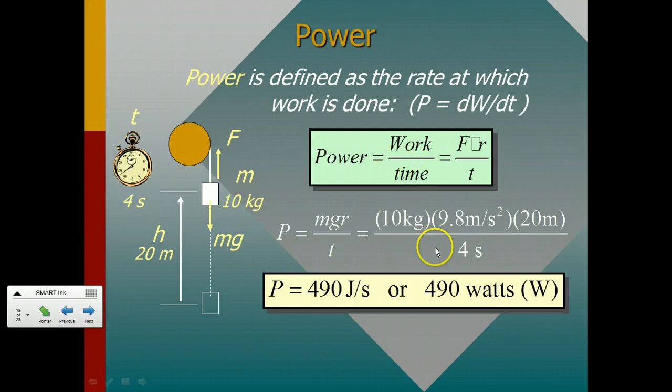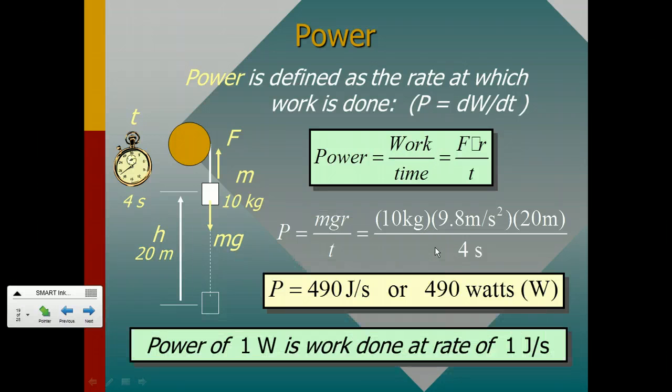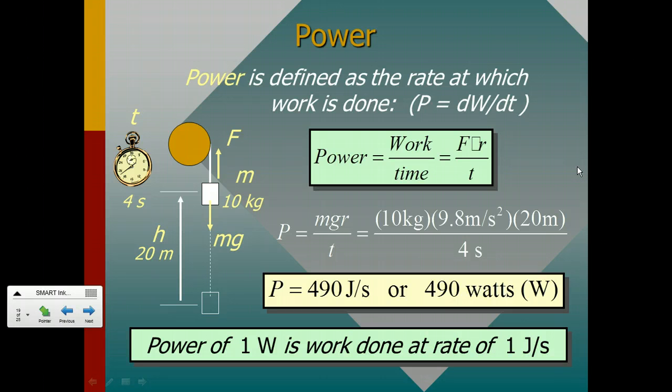Joules per second, or the SI unit for power is the watt, the capital W. And so there's a relationship then between joules per second and watts, and that is that one watt is the amount of work that's done at a rate of one joule per second. So one watt is one joule of work done every second.